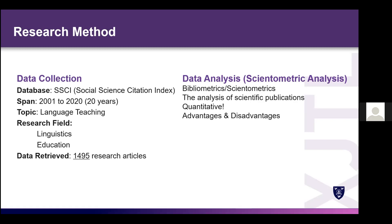For junior researchers like master's or PhD students, scientometric analysis can be used to evaluate the topic-specific or domain-specific situation of the academia. You could identify which article is the most influential, which author is the most influential, and which journal is the most influential in your specific topic. If your supervisees don't know where to start, or if what you're interested in is not a mainstream direction, use scientometric analysis to identify the most influential papers, authors, and journals.